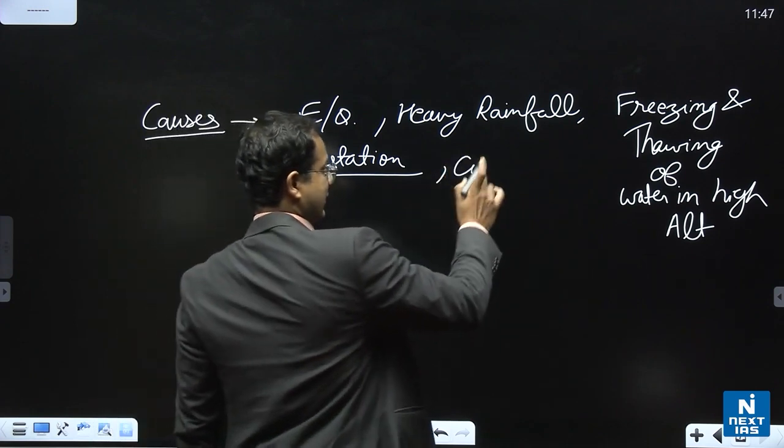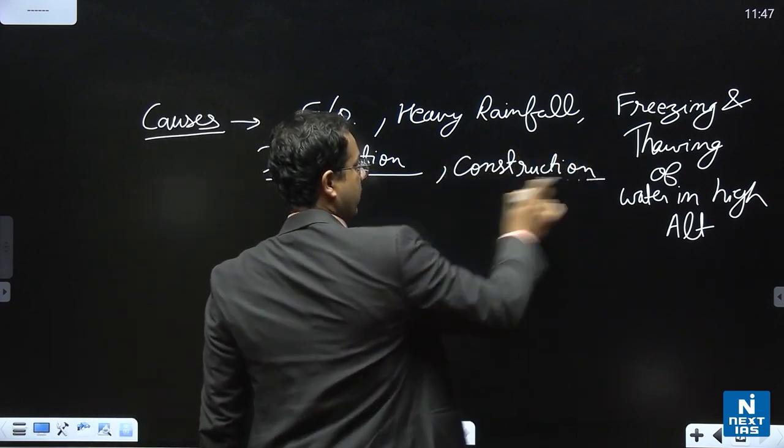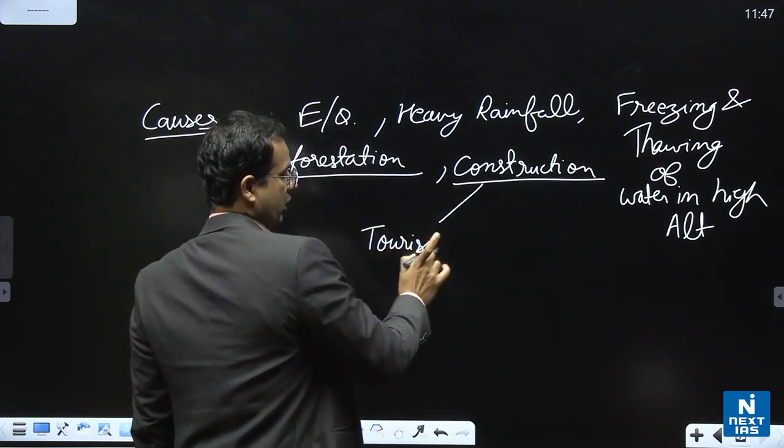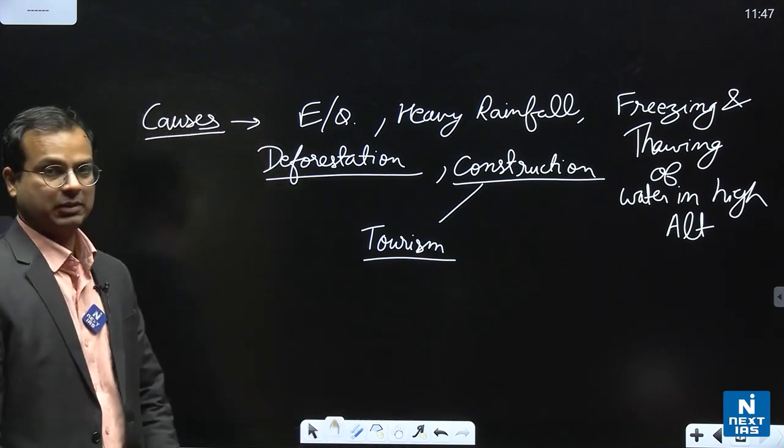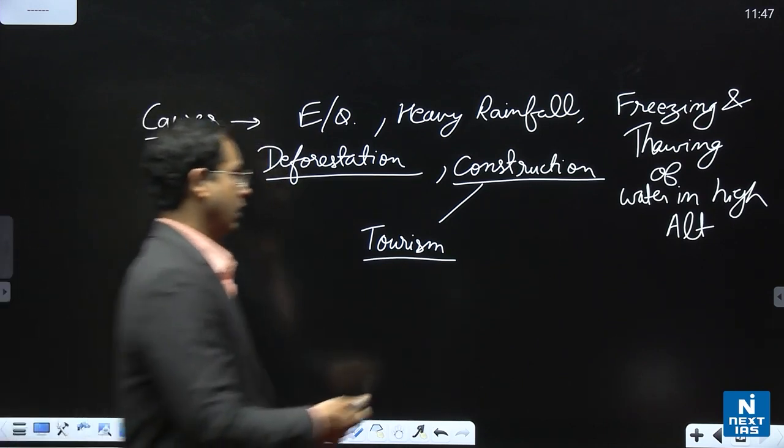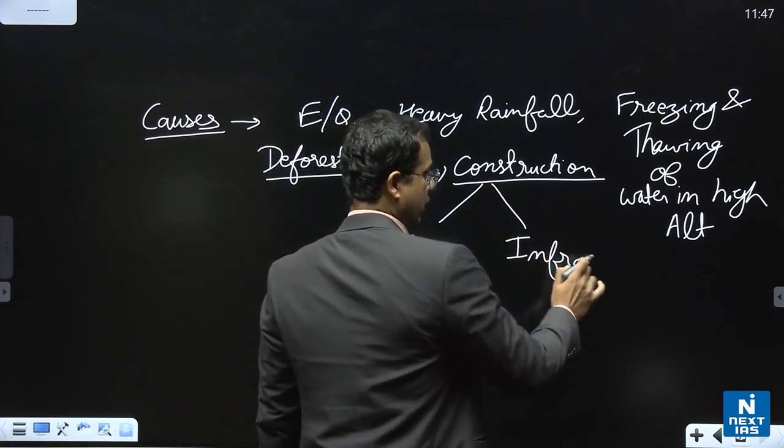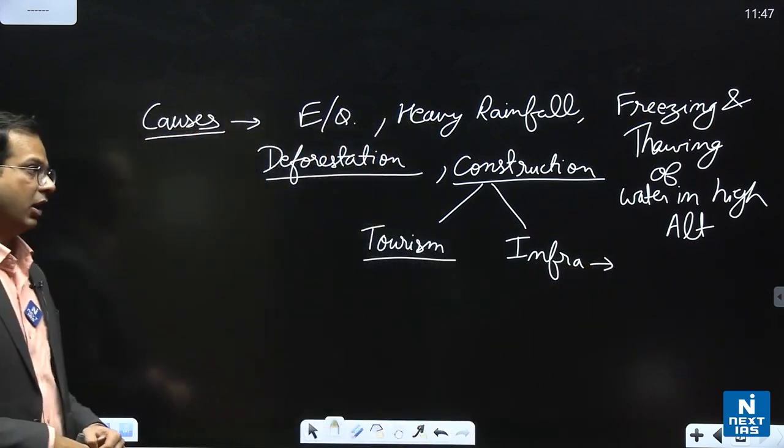And after deforestation, construction activities - construction activities can be either for tourism purpose, like hotels, resorts, guest houses, these are being built in the hilly areas. Apart from this, there can be infrastructure related construction activities. For example, roads, highways, bridges, communication lines, etc. So all these construction activities can also weaken the land.